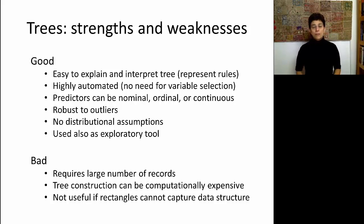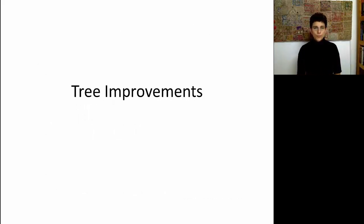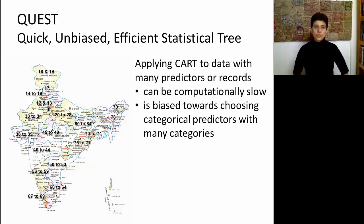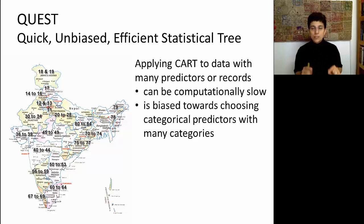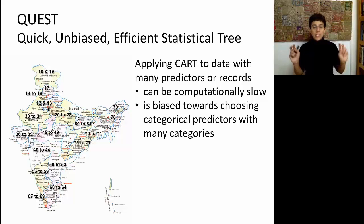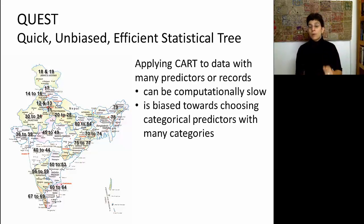Given these weaknesses, there have been multiple attempts to create tree improvements. One interesting problem that arises is when you have a categorical predictor with many, many categories — a classic example is postal code or city. The tree searches each predictor and looks at every possible partition, so a predictor with lots of categories gets a lot more attention from the tree, making it more likely to show up in the tree even if it is not the best predictor.